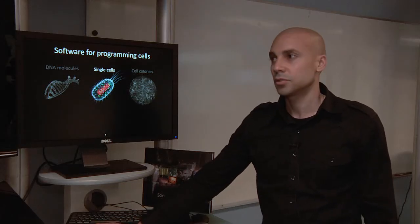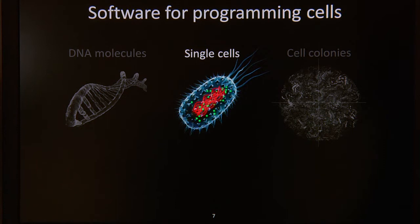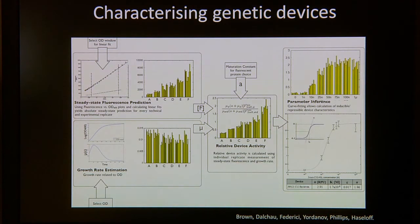At the level of single cells, we've been developing computer software for programming genetic devices in terms of genes and proteins. In collaboration with the lab of Jim Hasselhoff at the University of Cambridge, we've actually developed a method for characterizing genetic parts in order to predict the behavior of systems or devices made of those parts more accurately.